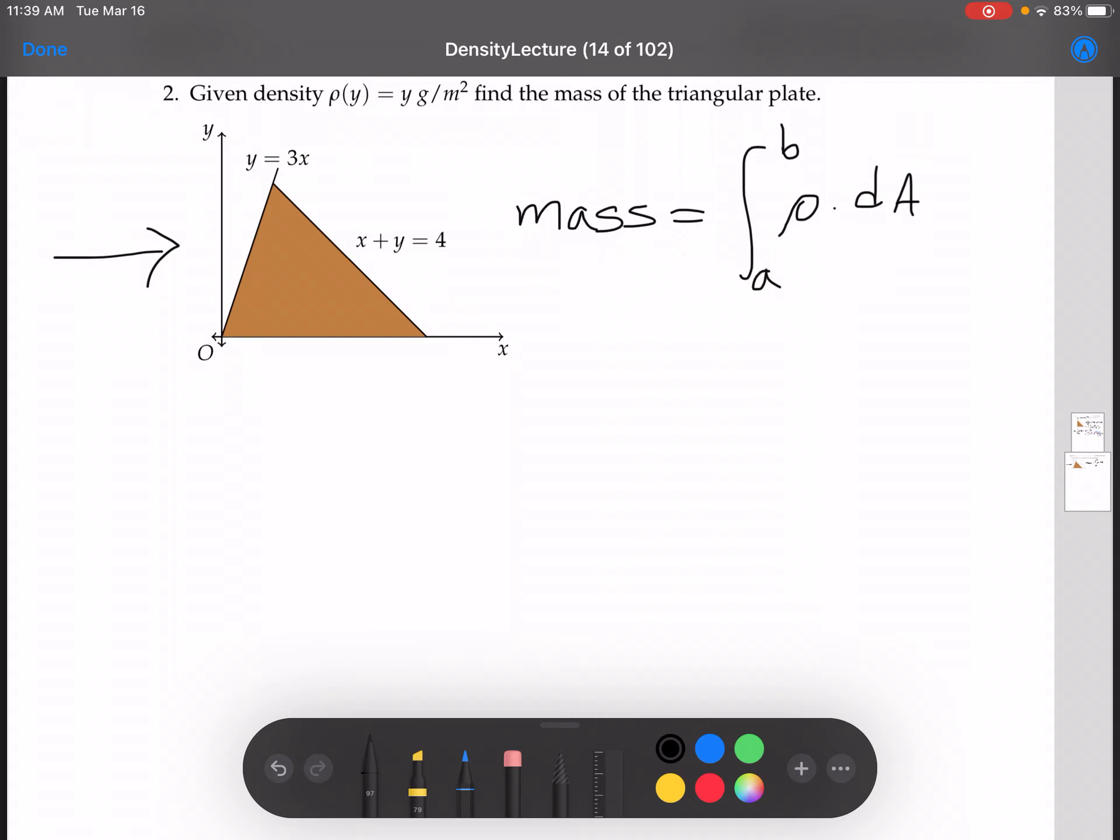Now we could find this mass by integrating along the x-axis, but this will be way too hard. This will require two integrals. So we're going to integrate along the y-axis, but before we do that, let's see why we would need two integrals to integrate along the x-axis.